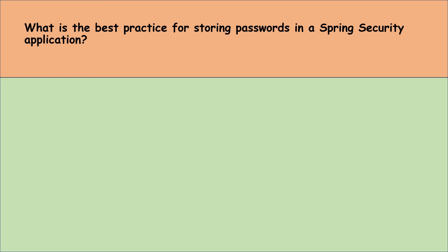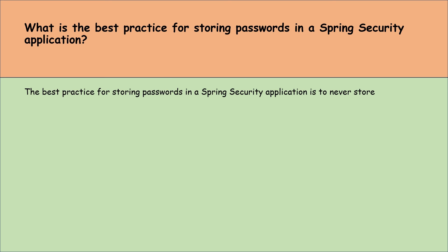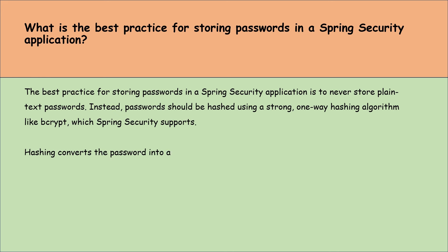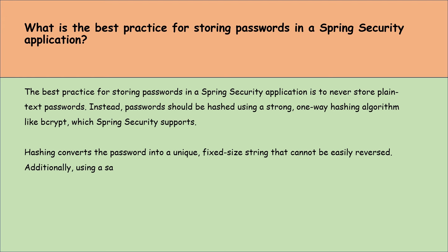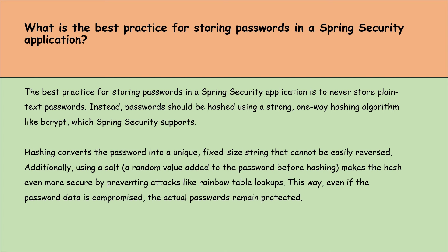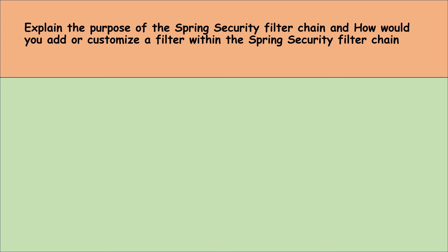What is the best practice for storing passwords in a Spring Boot application? The best practice is to never store plain text passwords. Instead, passwords should be hashed using a strong one-way hashing algorithm like BCrypt, which Spring Security supports. Hashing converts the password into a unique fixed-size string that cannot be easily reversed. Additionally, using a salt — a random value added to the password before hashing — makes the hash even more secure by preventing attacks like rainbow table lookups. This way, even if the password data is compromised, the actual passwords remain protected.